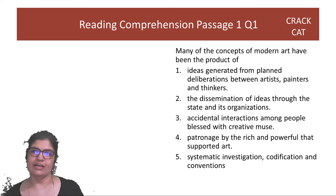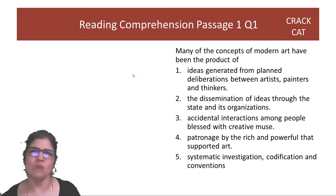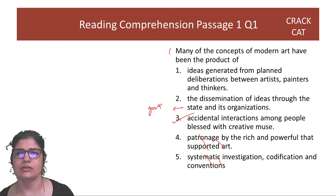Question one: Many of the concepts of modern art have been the product of what? If you see concepts of modern art, many of the concepts have resulted from accidental meetings. There's a very direct question. The sentence also starts in the same manner. So there's accidental meetings. It is not rich and powerful, there's no systematic investigation, it is definitely not the state, and there's no deliberations. The answer is the third option.